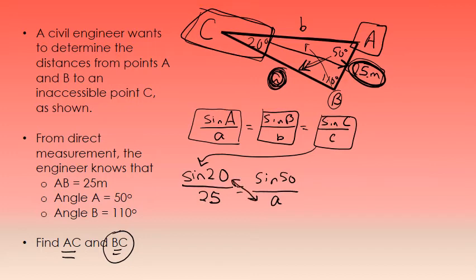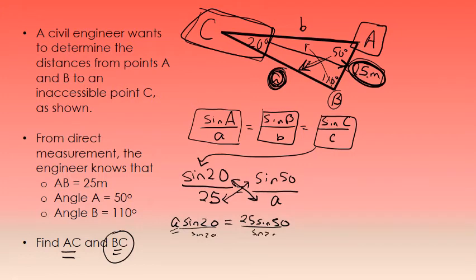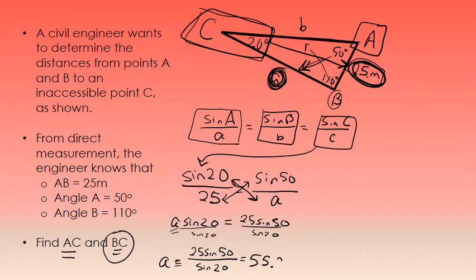Cross multiplying gives A times the sine of 20 equals 25 times the sine of 50. Solving for A by dividing both sides by the sine of 20 gives side A equals 25 times the sine of 50 over the sine of 20. To three decimal places, that is 55.994 meters.